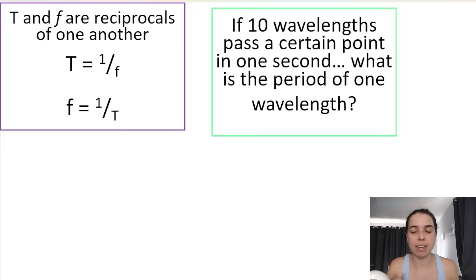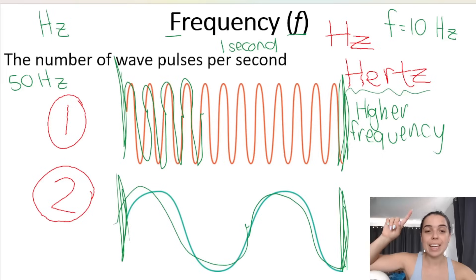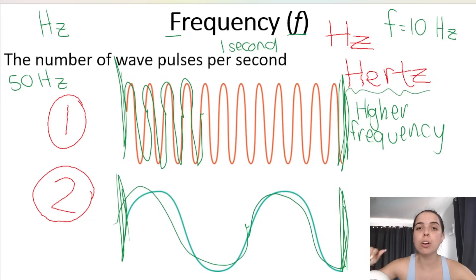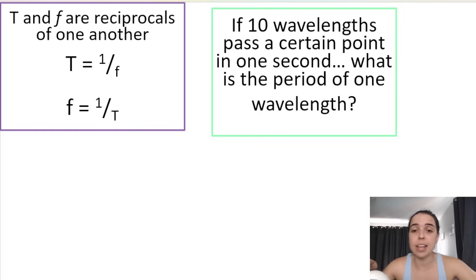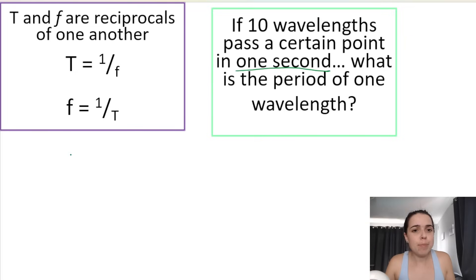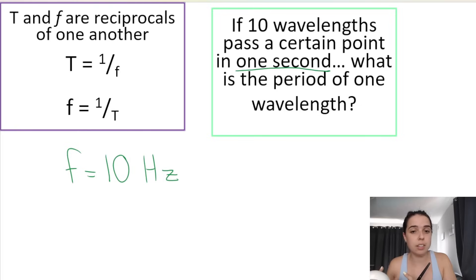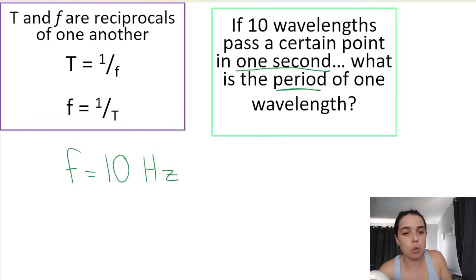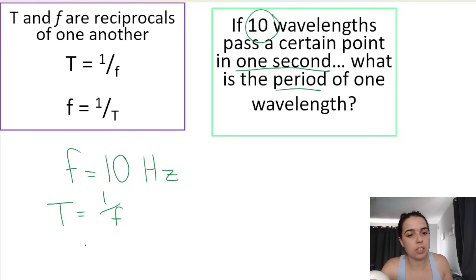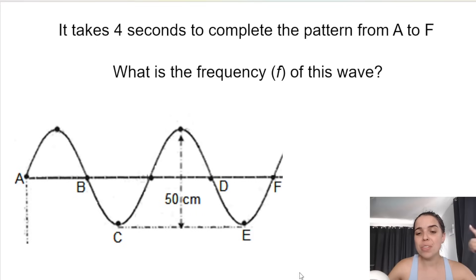If 10 wavelengths pass a certain point in one second, what is the period? Remember the definition of frequency: the number of wave pulses per second. So 10 wavelengths per second means the frequency is 10 hertz. If 100 wavelengths pass in one second, the frequency is 100 hertz. Now, using the formula: T = 1/f = 1/10 = 0.1 seconds.